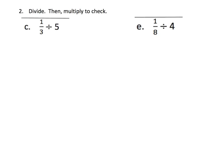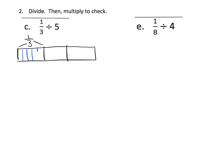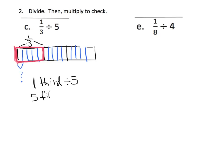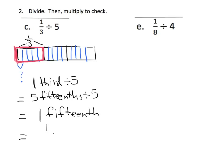A couple more examples. At this point we should have students start to see the pattern — it's fairly quick. Here's one-third, and we're going to chop each of those thirds into five pieces. We want to know the size of one of those pieces: one-third divided by five. One-third is the same thing as five-fifteenths. So five-fifteenths divided by five is one-fifteenth. Our answer is one-fifteenth.